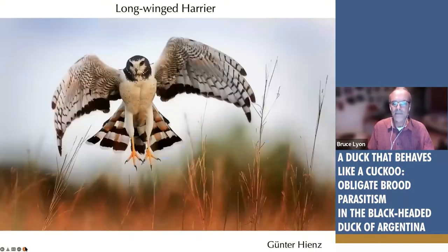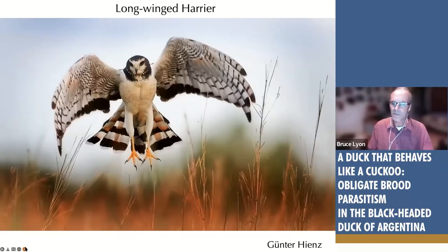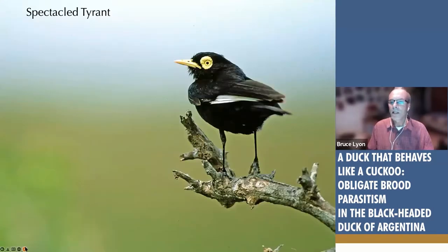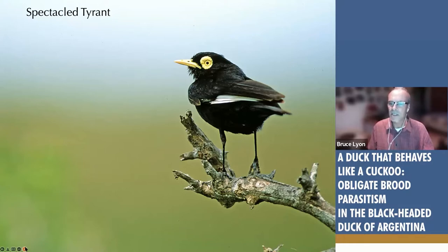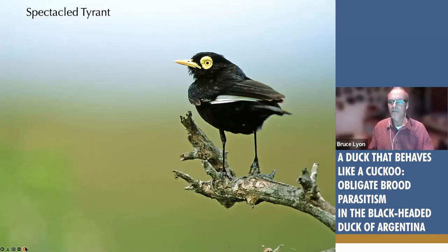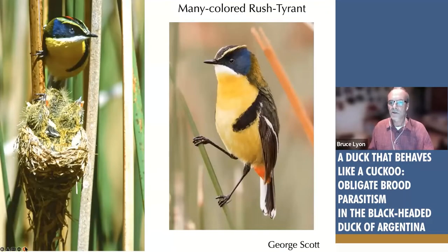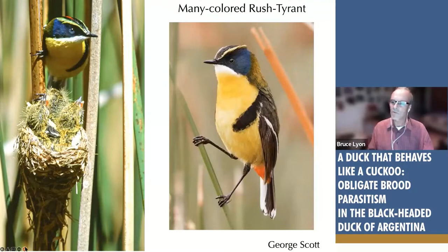Some of the remarkable species: black-necked swans; long-winged harriers, which are colonial-nesting and come in two color phases; an interesting polygynous flycatcher where males defend harems of females with flashy yellow skin around the eye and do a somersault wing-flick display to attract females; and the many-colored rush tyrant, where males and females are both extremely colorful and weave hummingbird-sized nests onto a single bulrush stem — one of my favorite wetland birds. Very common and easy to see if you go to Argentina.